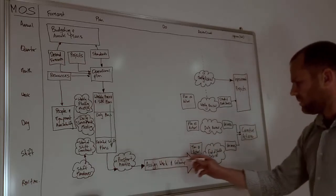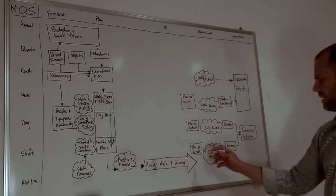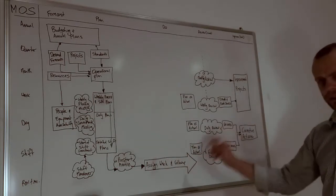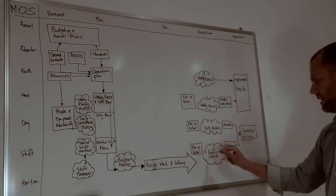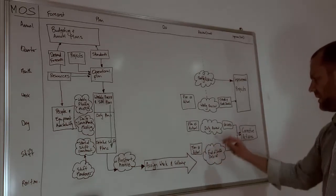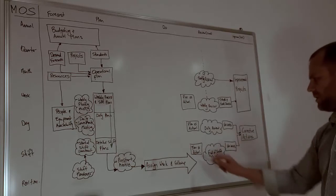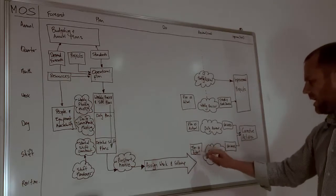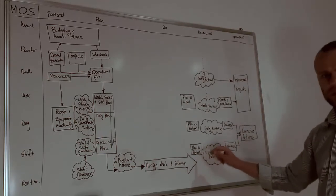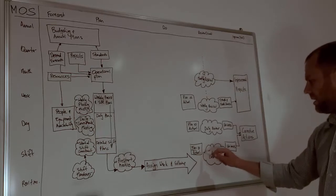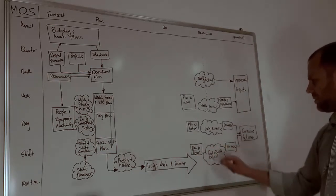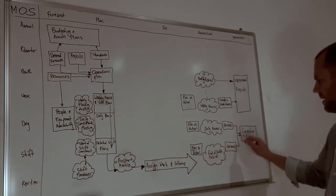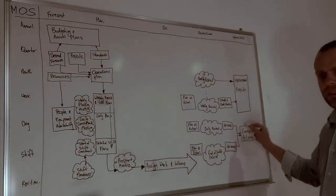Once we get to the end of the shift, it's a really valuable tool to be using here is this end of shift debrief meeting. So we get the end of the shift, we talk about the plan, how we went against it, what the actual results were against the plan, and we debrief and talk about the variances from the plan and what we're going to do to fix those so that they don't happen again.